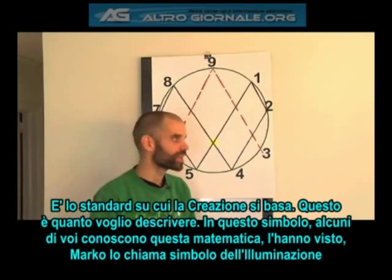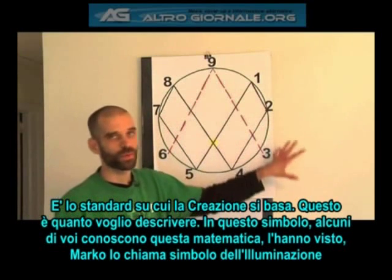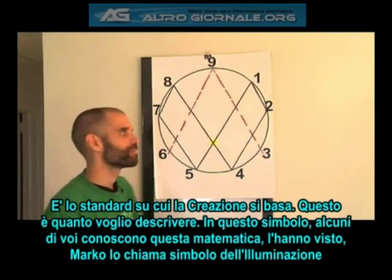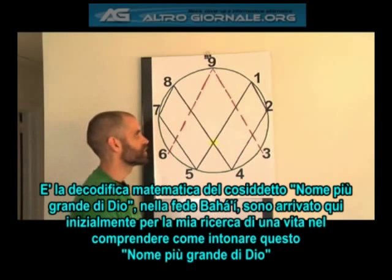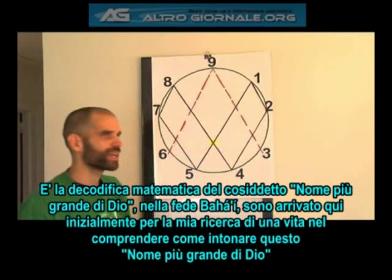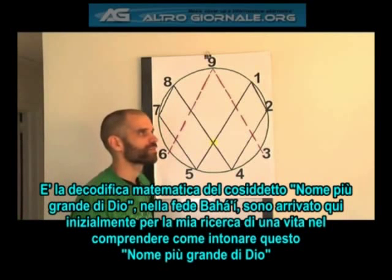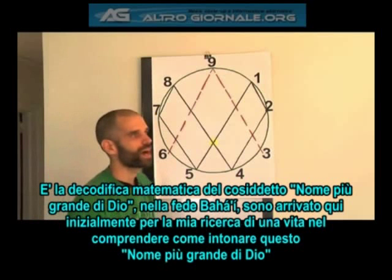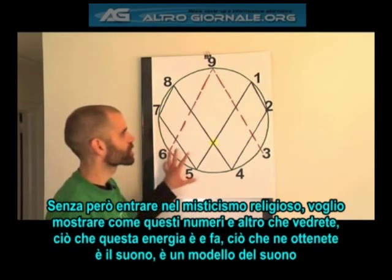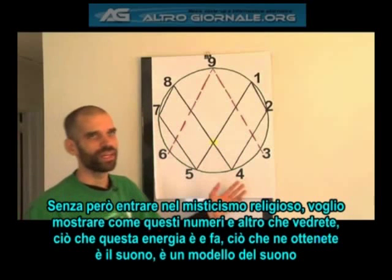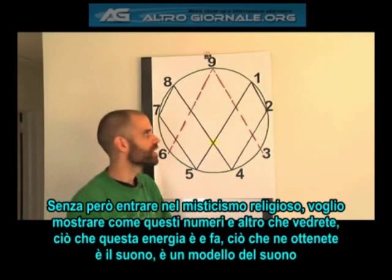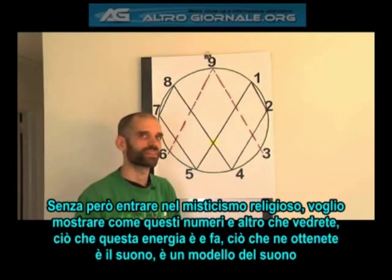So that is what I want to describe. Here it is, in this symbol before you. Those of you who are familiar with the math have seen this. Marco refers to it as the symbol of enlightenment. It is a mathematical decryption of what is known as the most great name of God in the Baha'i Faith. I came to this work initially because of my lifelong search for understanding how to interpret the most great name of God. But without going into religious mysticism, I am simply trying to point out that these numbers — and everything I am going to show — even what this energy really is and does, the closest thing you can get to it is sound. What this is, is a model for sound, for resonance, for harmonics.